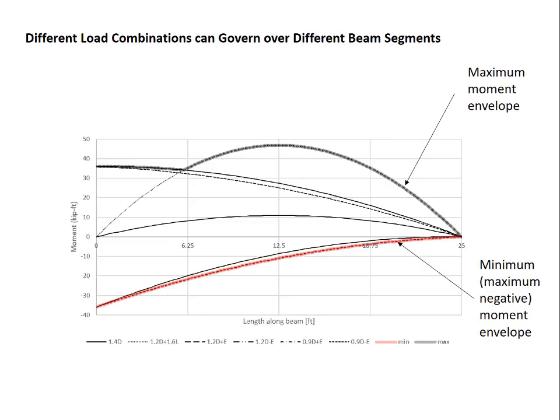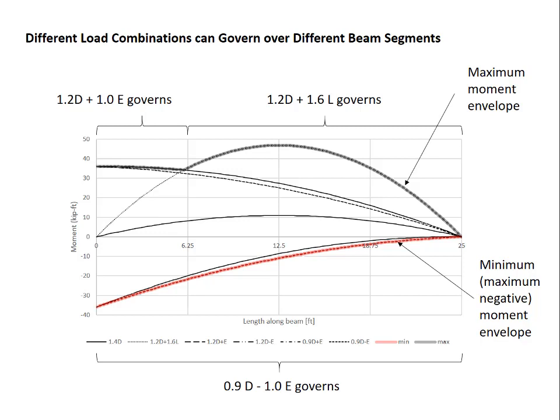We're arriving at the end. We'll do a little interpretation of the results. We've identified the maximum moment envelope shown there in gray. The minimum moment envelope, sometimes called the maximum negative moment envelope. And we see that there are different moment diagrams that govern over different sections of the beam. Over most of the beam, the positive moment is governed by 1.2 dead plus 1.6 live. On the remainder, the positive moment is governed by 1.2 dead plus earthquake. On the negative side, that envelope is governed by 0.9 dead minus earthquake. So in this case, three different load combinations determine the design moment for this one beam.